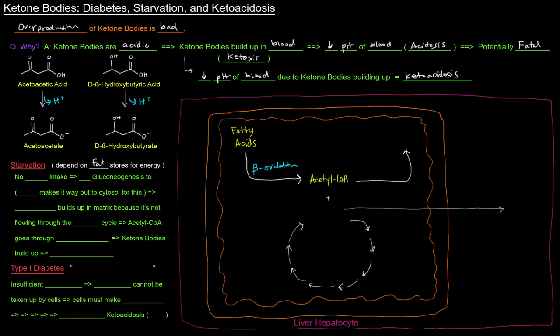Also, during starvation, we're not taking in food. If someone's starving, they have no carbohydrate intake, no glucose. So their body responds by increasing gluconeogenesis. And when this happens, when we have an increase in gluconeogenesis making glucose, what happens is that oxaloacetate in the mitochondrial matrix will basically make its way out into the cytosol in order to be part of gluconeogenesis.